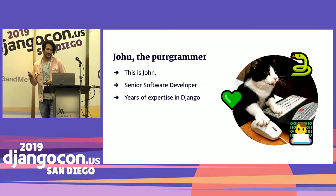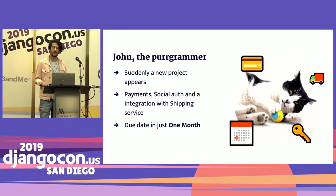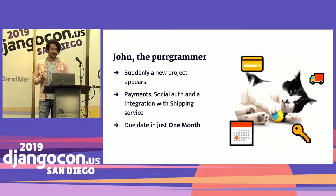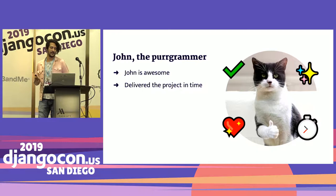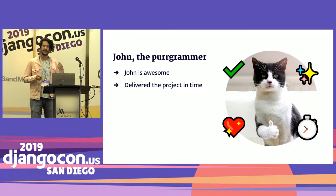John, the programmer. John is a senior software developer, always with a ton of work to do — a five-star programmer with years and years of expertise in Django. Suddenly, a new project appears on John's tasks. This new project needs to have a payment system, social authentication, and integration with a third-party shipping service. The due date for everything is about one month. But John is an awesome employee who always delivers his tasks. He took the project and delivered it on time.